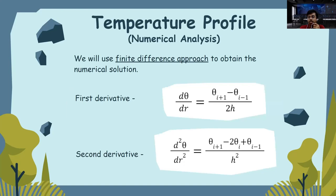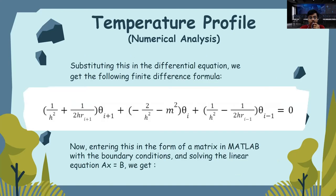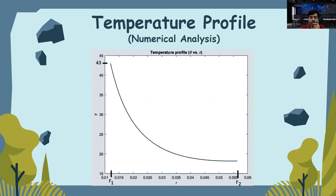We will use the finite difference approach to obtain the numerical solution. In finite difference approach, we have first derivative written as dθ/dr = (θ_i+1 - θ_i-1)/(2h). And second derivative written as d²θ/dr² = (θ_i+1 - 2θ_i + θ_i-1)/h². Substituting these two in the differential equation, we get the finite difference formula as the following. Now, we will enter this formula in the form of matrix in MATLAB with the appropriate boundary conditions and solve the linear equation Ax = b. We get the following temperature profile where you can see at r = r1, we have θ = 43, which was one of the boundary conditions.